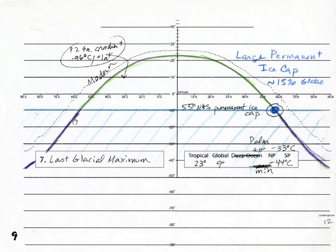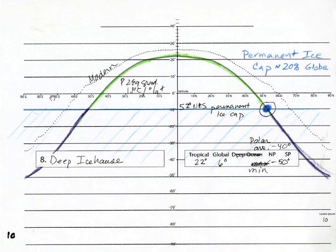If we keep cooling the earth, this curve is falling below the dotted line. The gradient is continuing to steepen as the polar regions cool. This is what you might call a deep ice house, cooler than the last glacial maximum. Global temperatures would be 6 degrees, tropical temperatures 22 degrees, minus 50 degrees at the poles. The permanent ice cap now has migrated down to 52 north and south, which is about the latitude of southern Canada. 20% of the globe is covered by snow and ice.